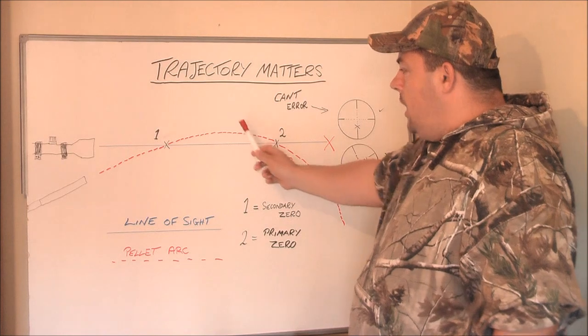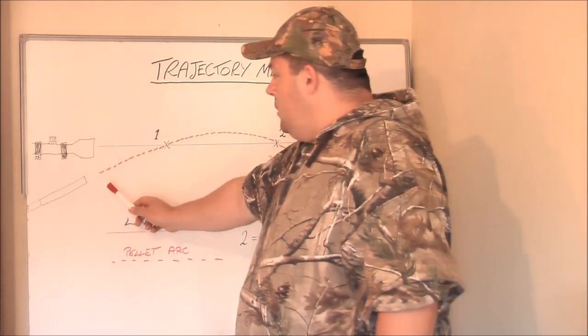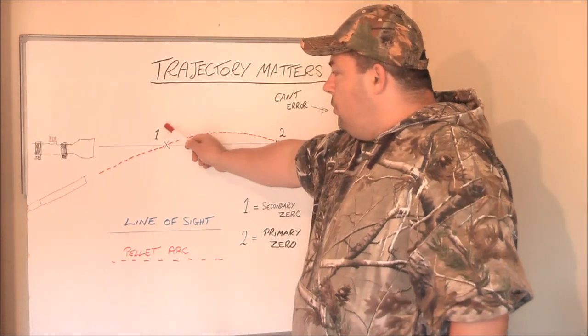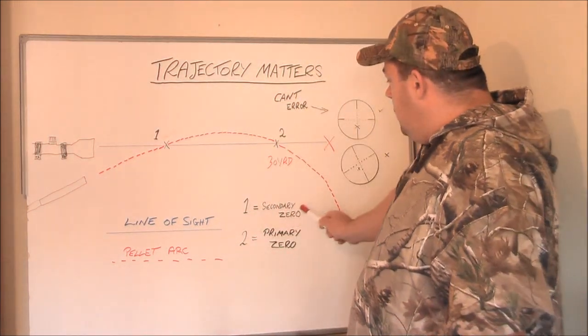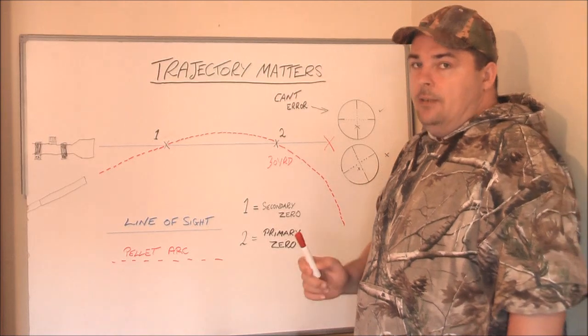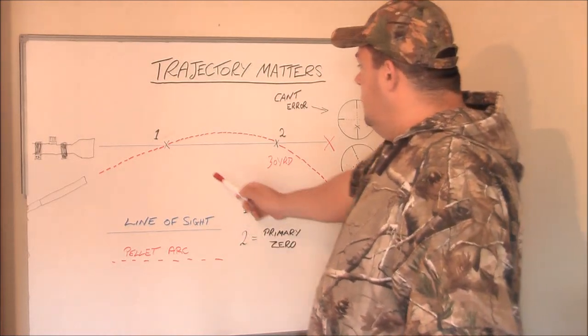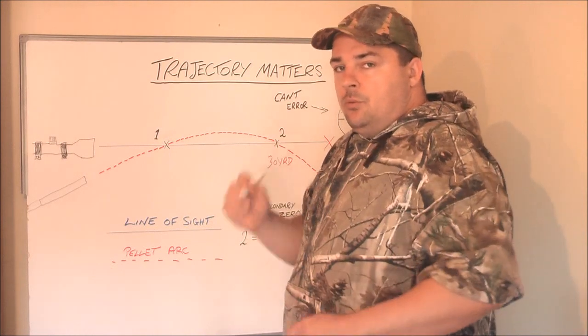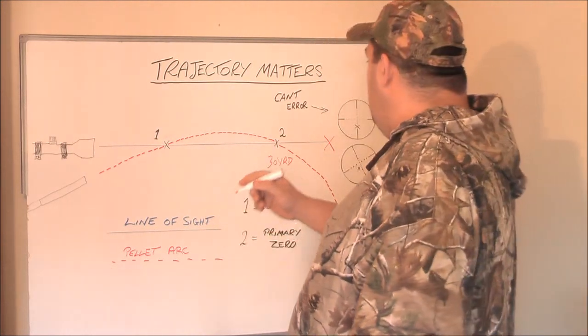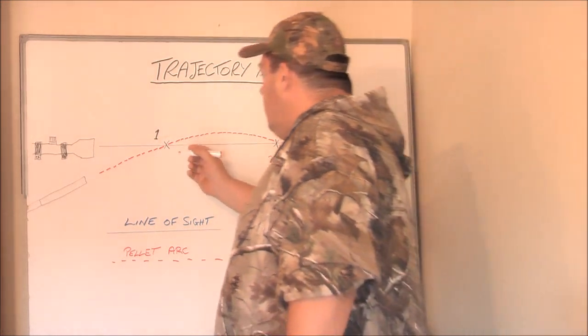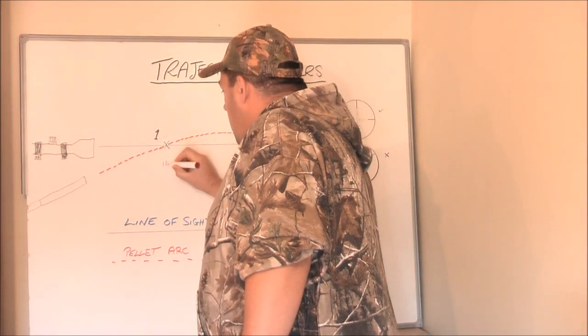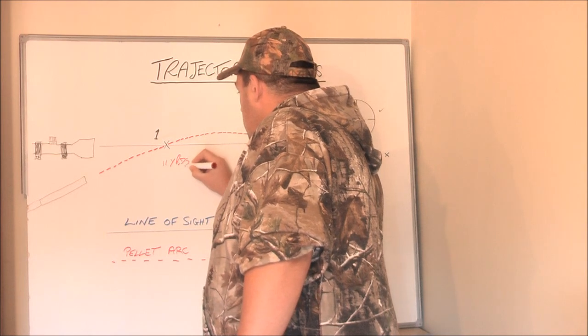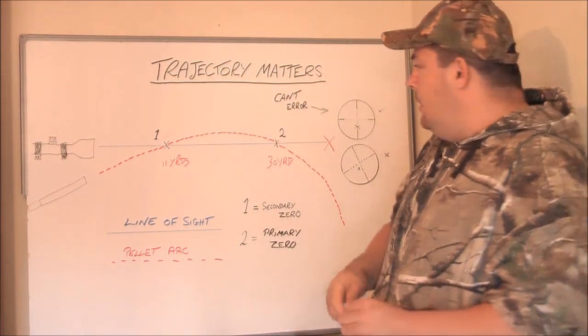For it to reach here the pellet will travel from the gun. It will go up through number 1. Number 1 is known as your secondary zero point. Now, it depends on your muzzle velocity and your pellet weight. But lets say that this is around 11 yards.